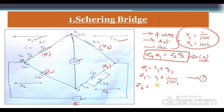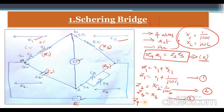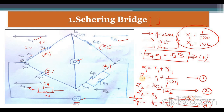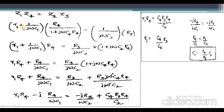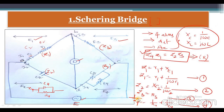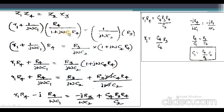For Z2, only capacitor C2 is present, so Z2 = 1/jωC2. For Z3, only resistor R3 is present. For Z4, capacitor C4 and resistor R4 are connected in parallel, so 1/Z4 = 1/R4 + jωC4. Rearranging gives Z4 = R4 / (1 + jωC4·R4).